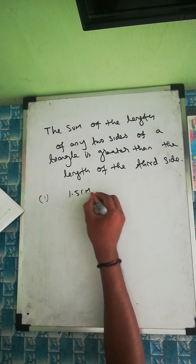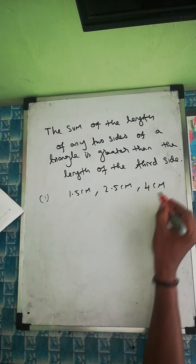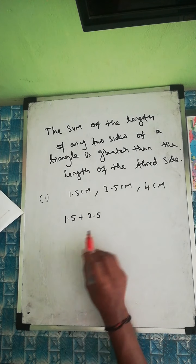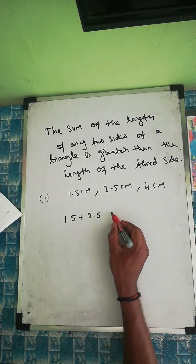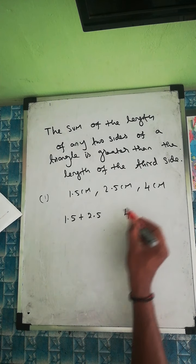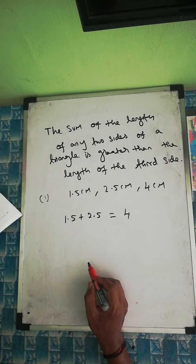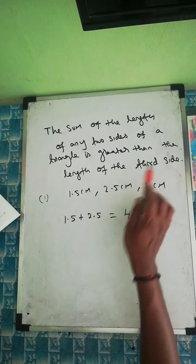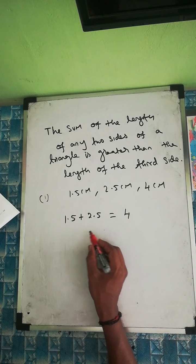First question: sides of 1.5 cm, 2.5 cm, and 4 cm. Take the first two sides: 1.5 plus 2.5 equals 4. The third side is also 4, so the sum is equal to the third side, not greater. The sum of any two sides must be strictly greater than the third side, but here it is equal.